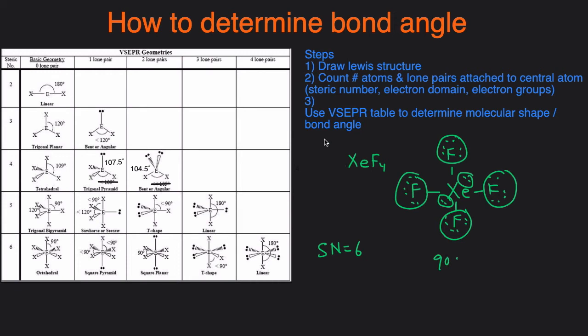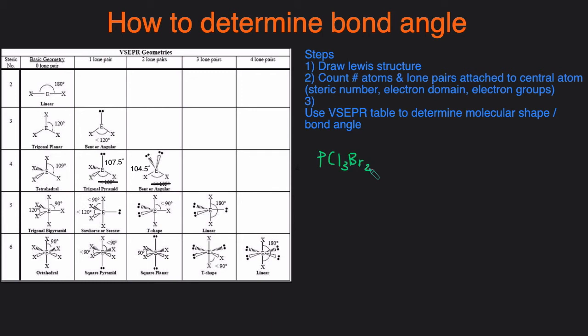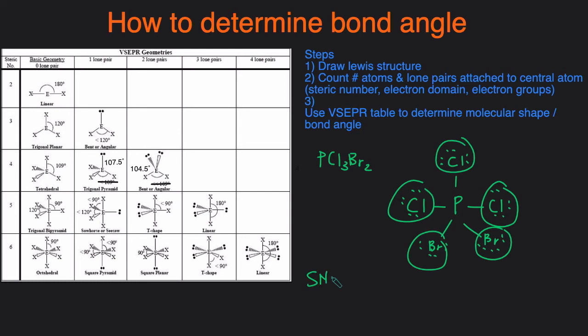Okay, let's take a look at one last example, PCl3Br2. And this is the Lewis structure. Then the next step is to determine the steric number. So we count the number of atoms and lone pairs attached to the central atom, which is the phosphorus. And we have one atom, two atoms, three atoms, four atoms, five atoms, and there are no lone pairs. So that means we have steric number five. We then look at the VSEPR table, a steric number five with zero lone pairs will give you trigonal bipyramidal. So that means the bond angle will be 120 degrees and 90 degrees.